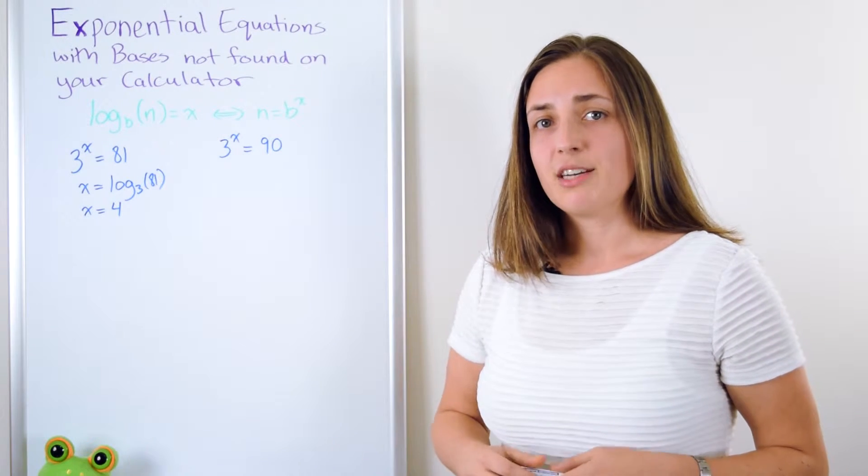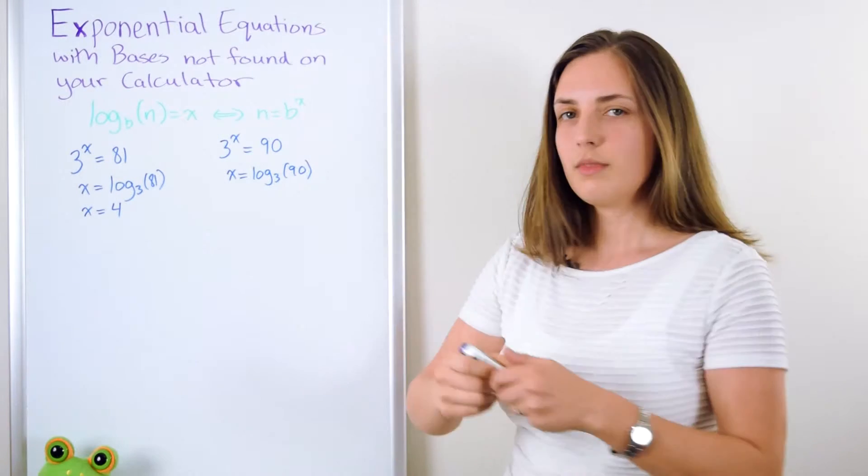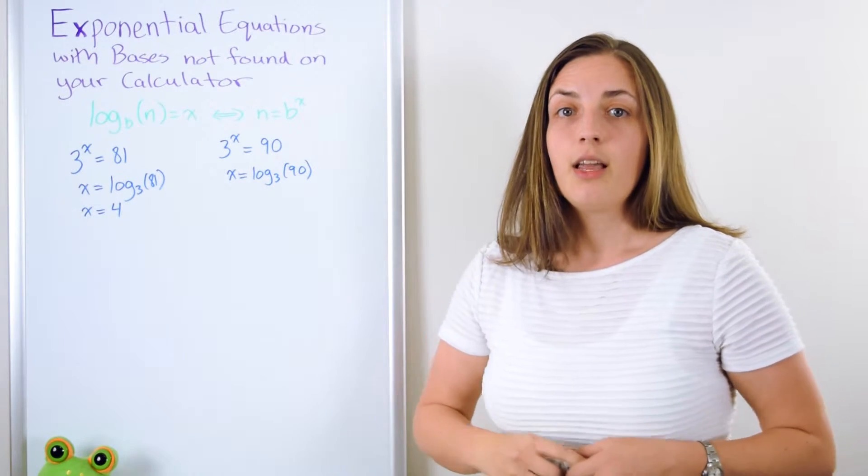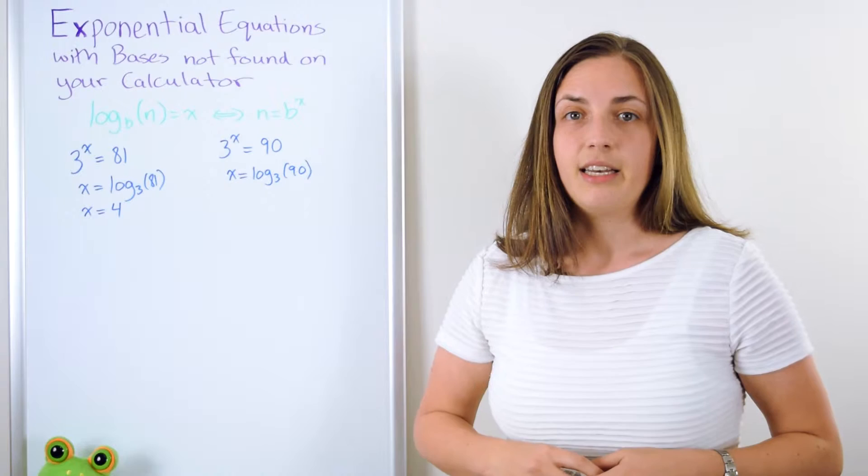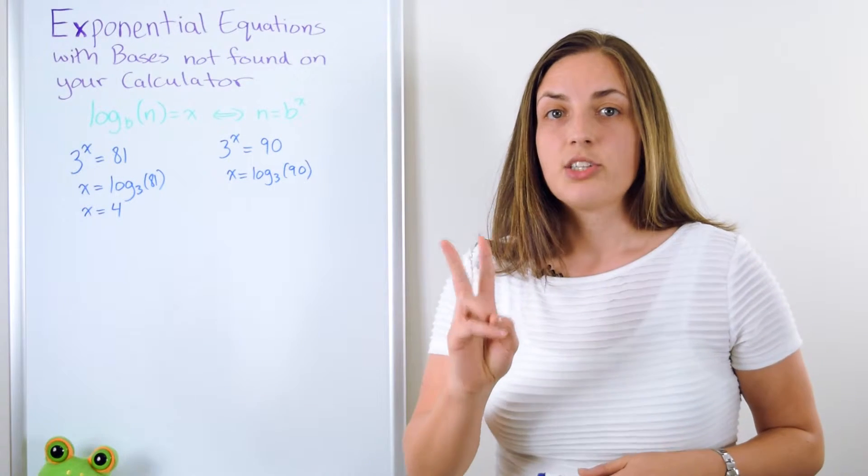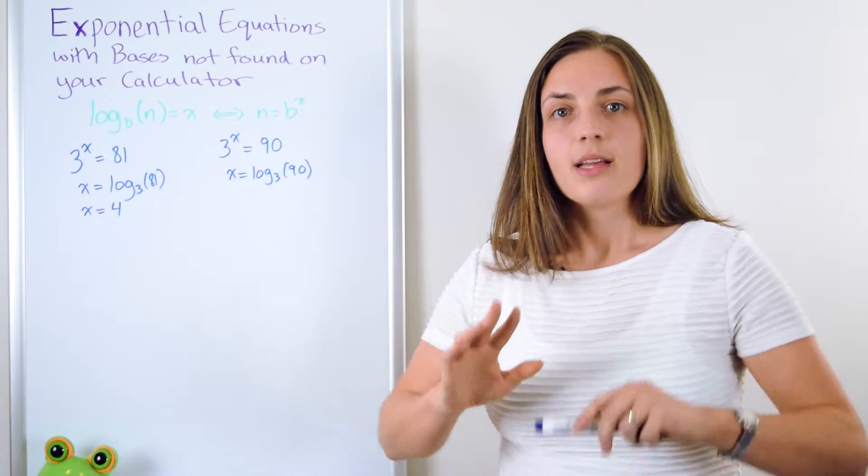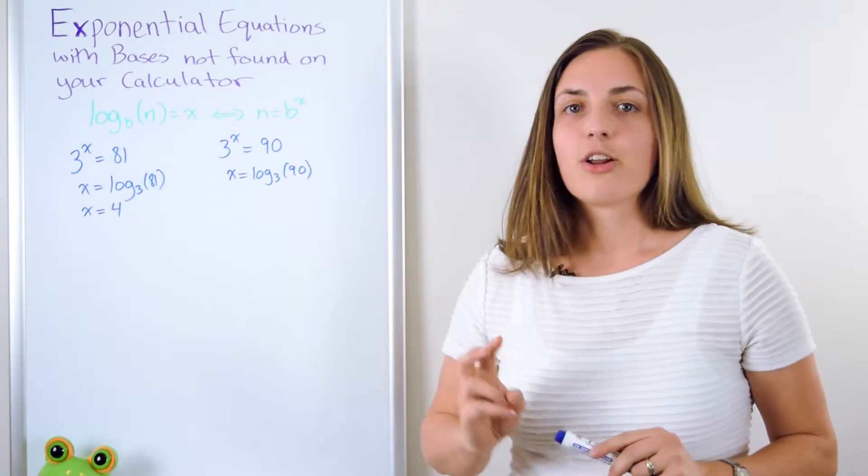So let's write down by definition what we know. By definition, x should be log base 3 of 90. How on earth are we going to calculate that? There's two ways to do this. The first way is to use the change of base rule.